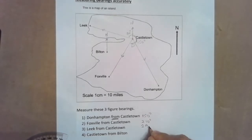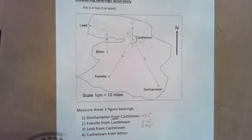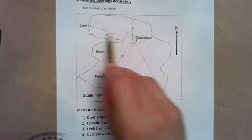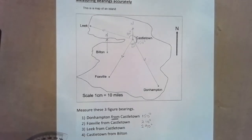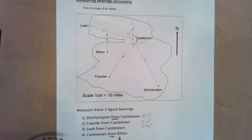But remember, bearings are measured clockwise, so what I want is 360 take away 70, which gives 290 degrees. So the bearing of Leek from Castletown is 290 degrees.